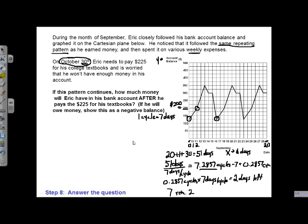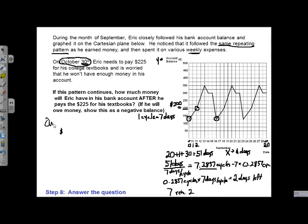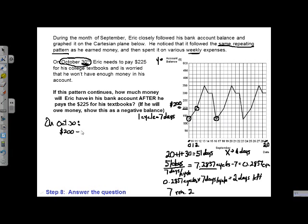And then our last piece is to go and answer the question. Well, what's our question asking? How much money will he have after he pays the $225 for his textbooks? Well, he's going to have, so I'll label this on October 30th. He's going to have $200 at the start of the day. And then we've got to take away the $225 for his textbooks.